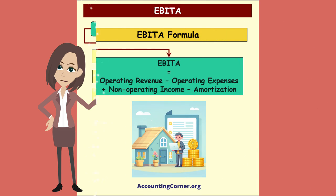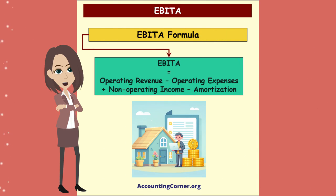The following formula is used to calculate EBITDA: EBITDA equals operating revenue, minus operating expenses, plus non-operating income, minus amortization.